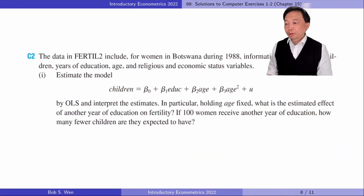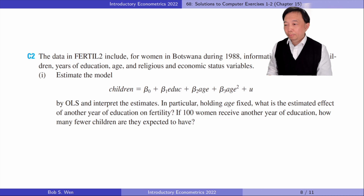Let's solve Computer Exercise 2. The data include information on the number of children, years of education, age, and religious and economic status variables.